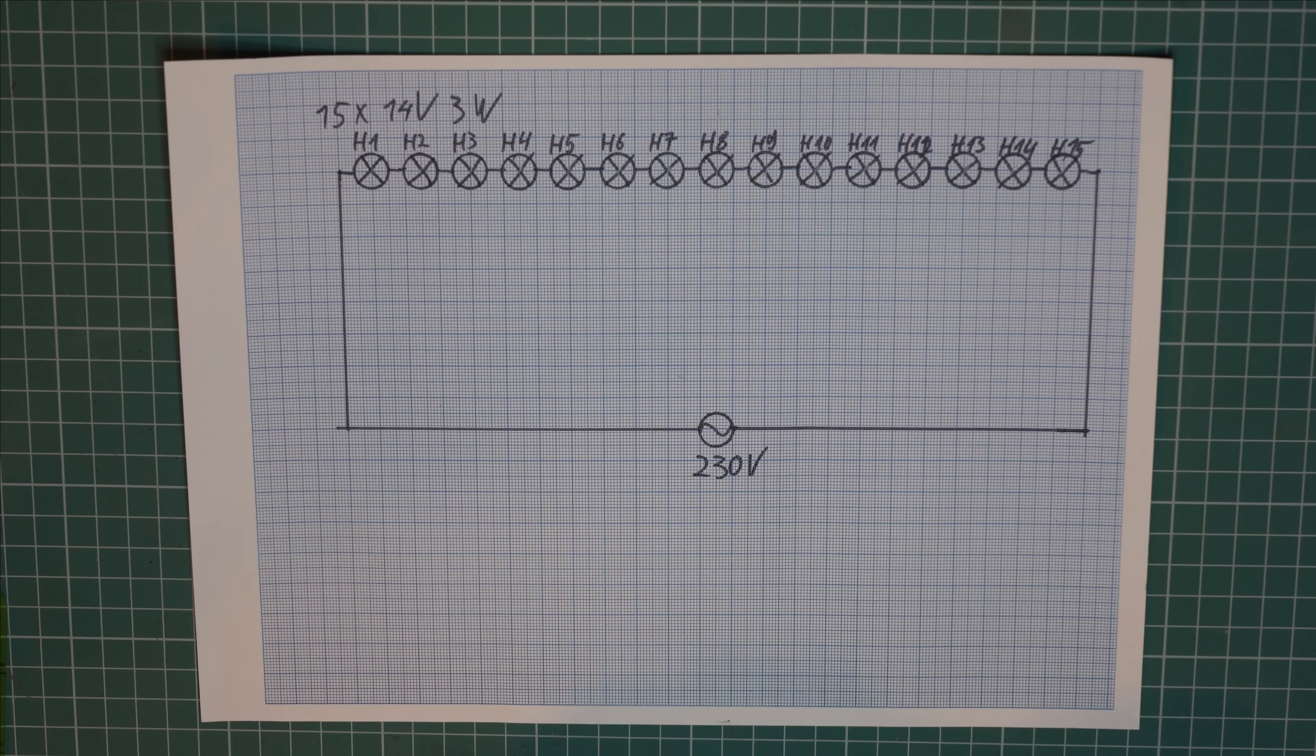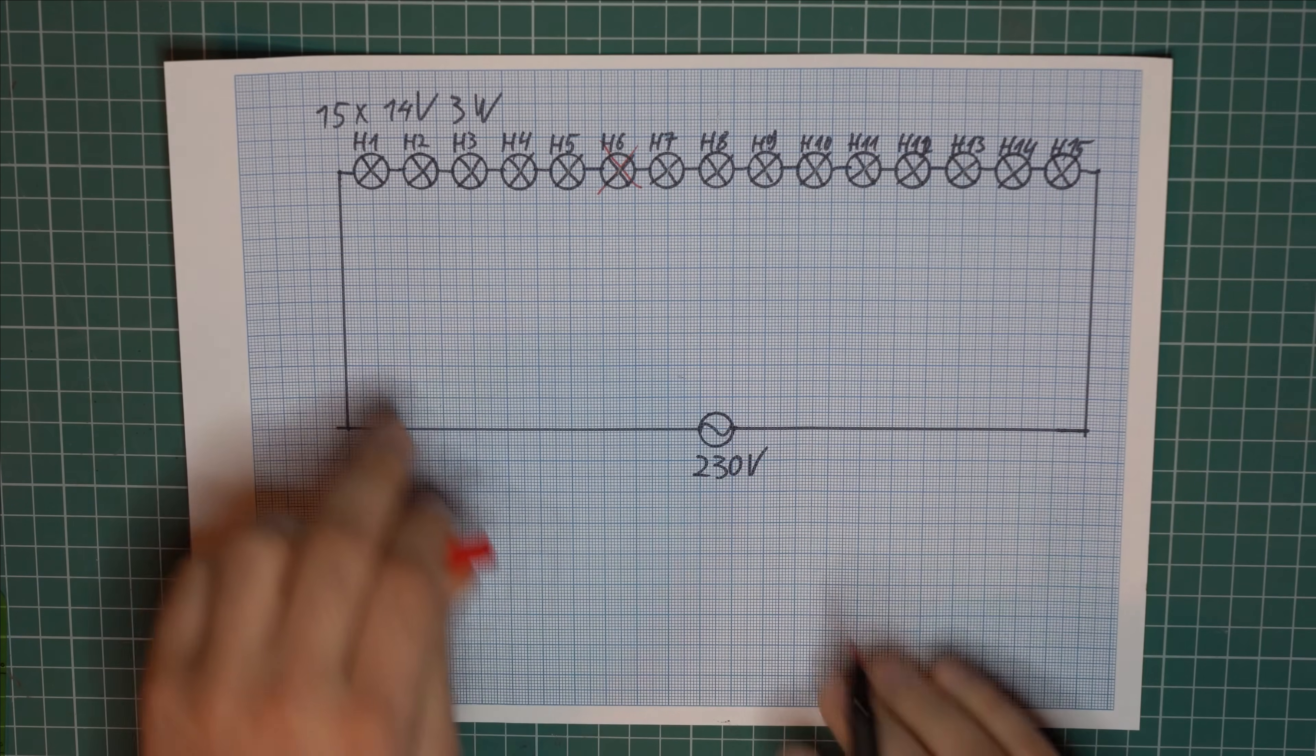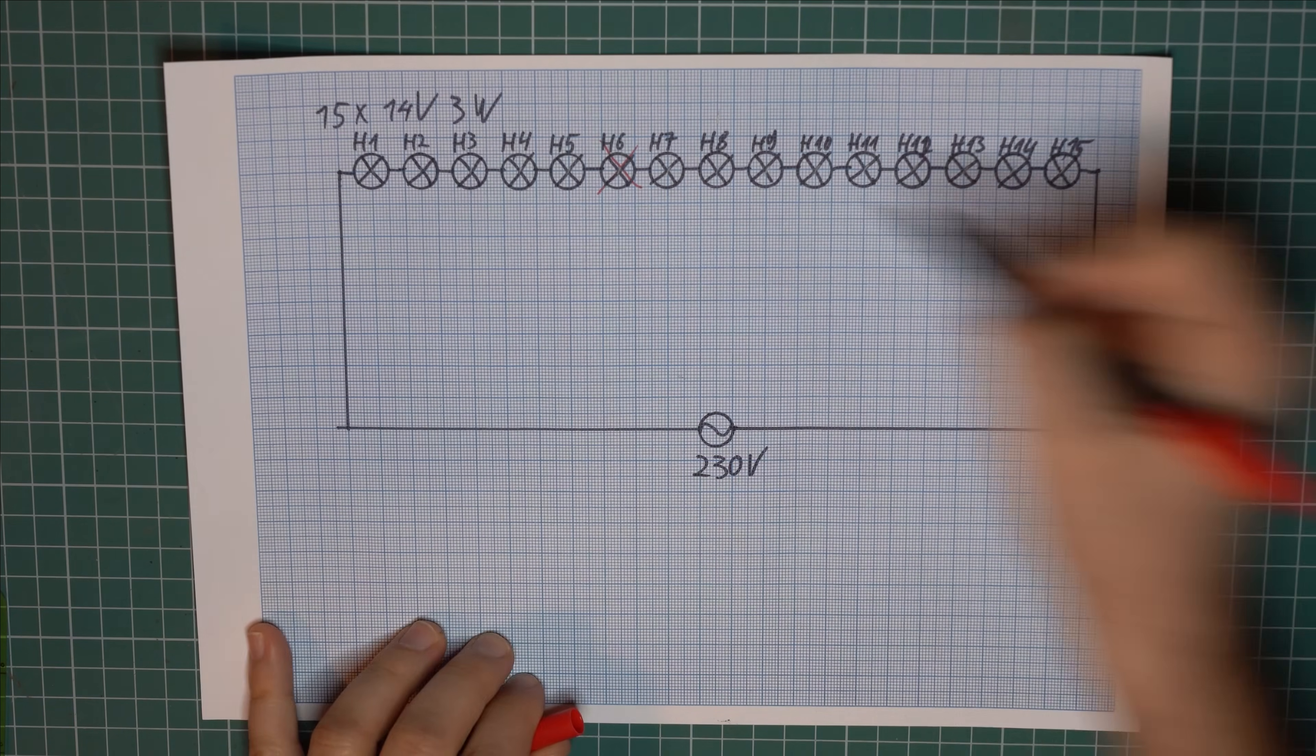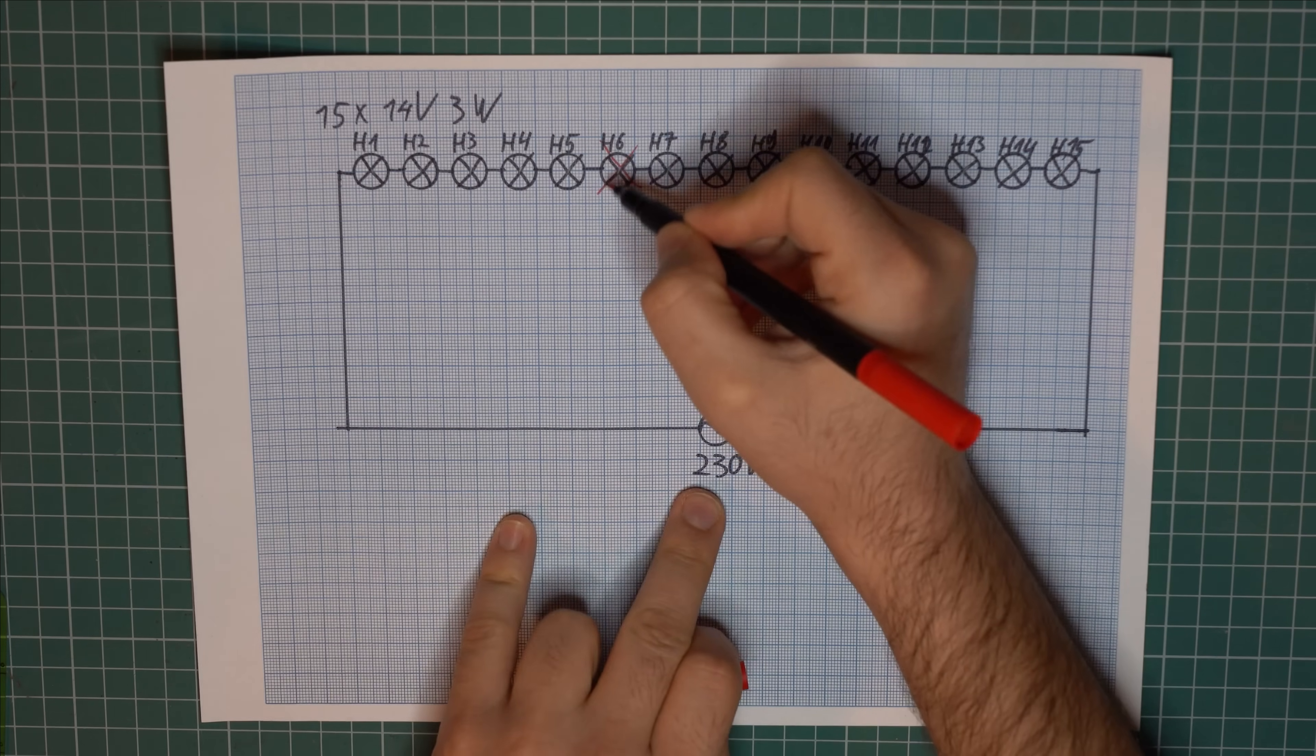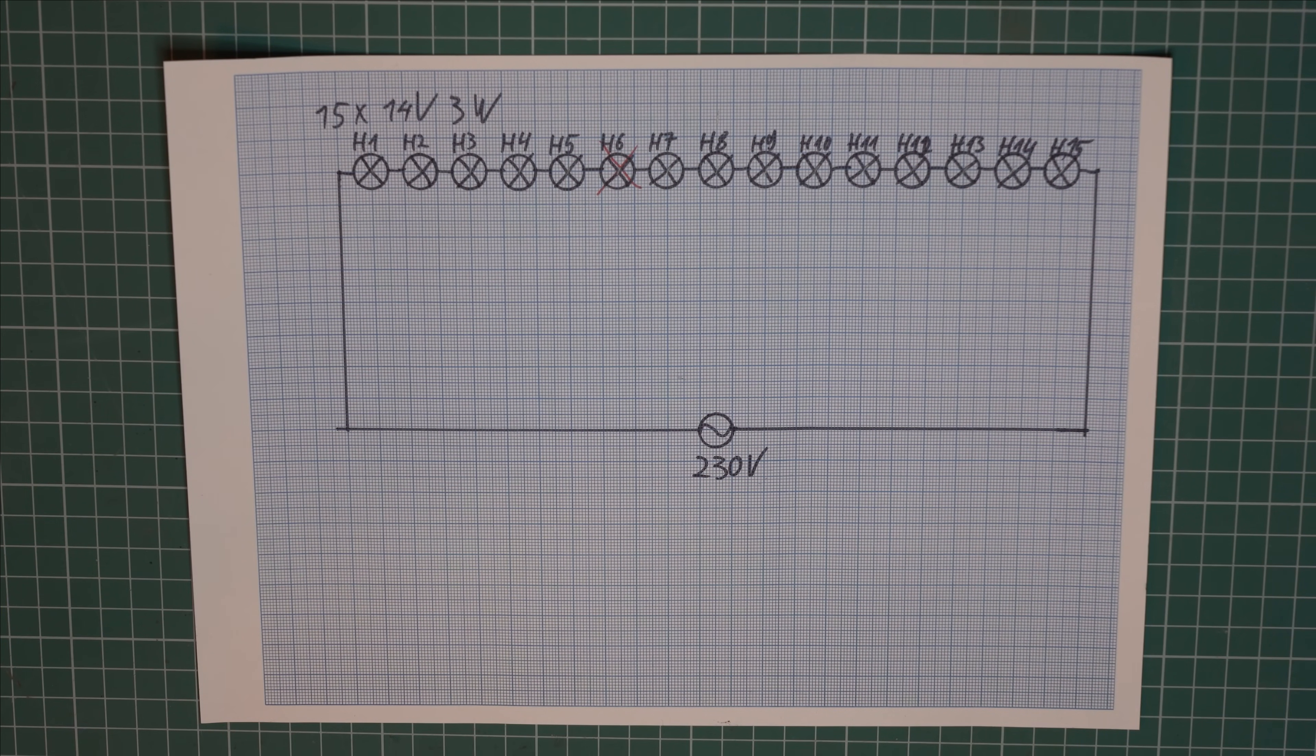So let's see what happens during a fault. Let's say that this light goes out. Well if this light goes out then current cannot flow anymore, so all of them go out. And this also means that the voltage doesn't spread equally anymore. So the faulty light will have the full mains voltage across its terminals. And now that we've seen how one light bypasses itself let's redraw the schematic.